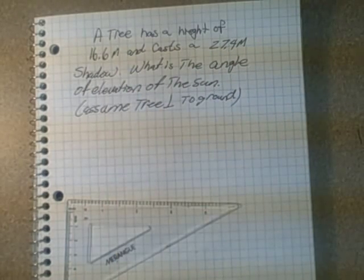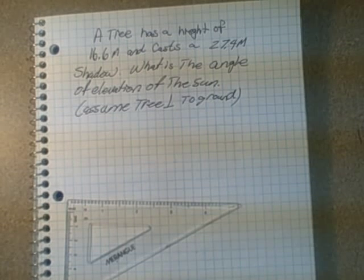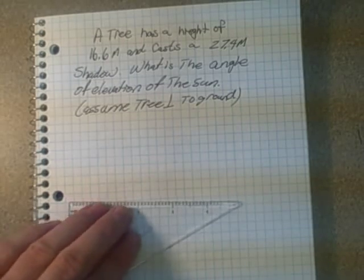A tree has a height of 16.6 meters and casts a 27.4 meter shadow. What is the angle of elevation of the sun? And we have to assume that the tree is perpendicular to the ground.